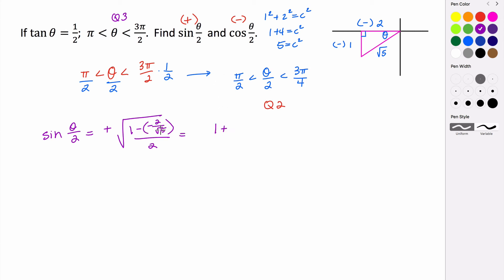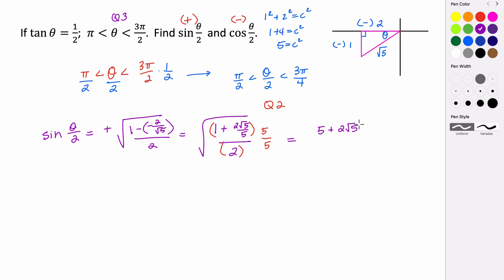So we have 1 plus 2 rad 5 over 5, all divided by 2. To clear the fractions, multiply everything by 5 over 5 — that's just multiplying by 1. Distributing in the numerator gives us 5 plus 2 rad 5, all divided by 2 times 5, which is 10. Taking the square root, we can break this into two radicals: the square root of 5 plus 2 rad 5, all over the square root of 10.